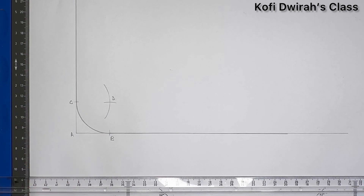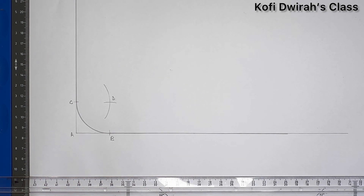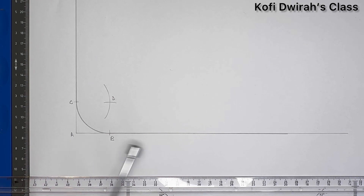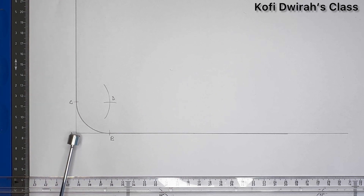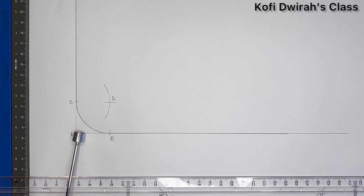So we have this. That is how to link or join two given perpendicular lines with the arc of a given radius. It's very simple, guys. First, draw your horizontal line, then with your set square and T-square, draw the vertical line so that the angle here is 90 degrees.